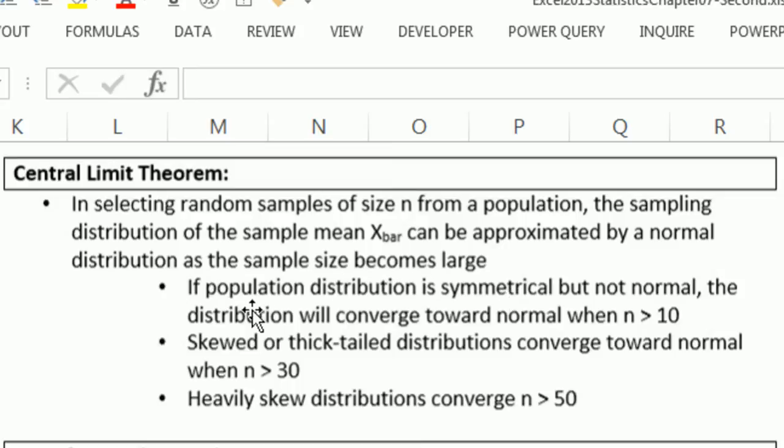If the distribution is symmetrical in the first place, then n greater than 10 will work. If it's thick-tailed or skewed, we can use n greater than 30. If it's heavily skewed, we can use n greater than 50. So as long as our n is big enough, we just take a sample and compare it to the standard normal curve.